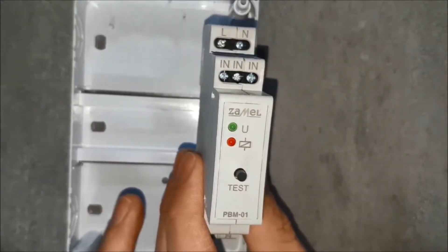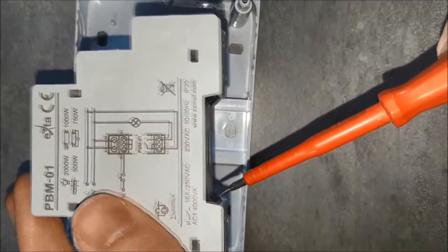Put the PBM-01 relay on the TH-35 rail. Spring clamps will be helpful.